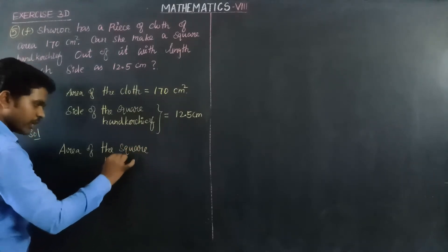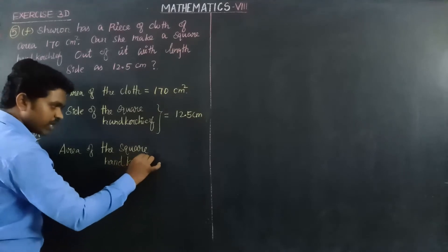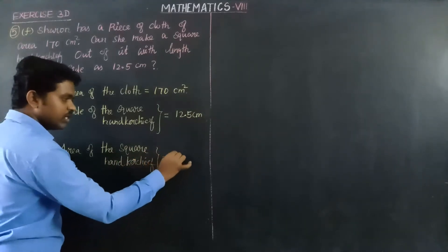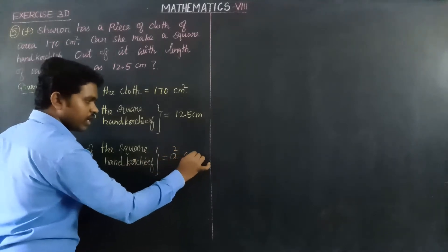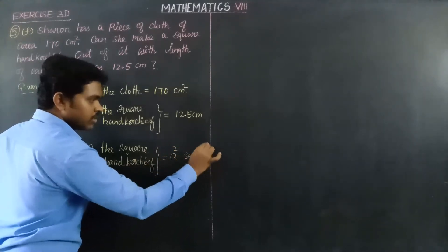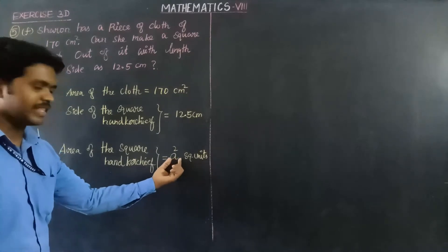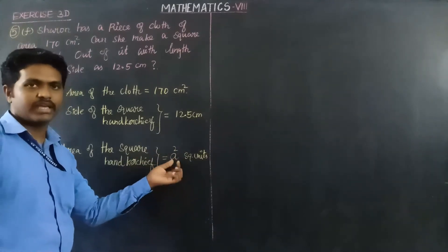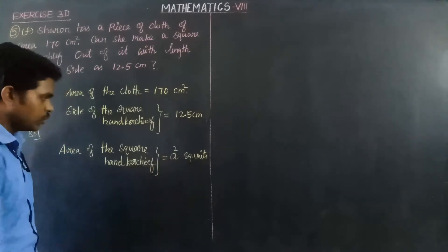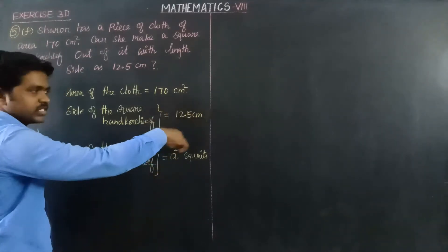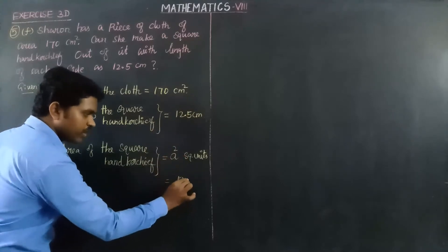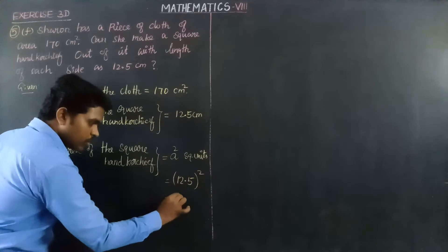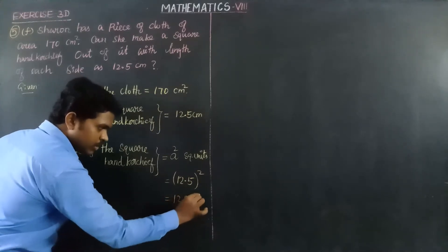The handkerchief is a square shape. Area of the handkerchief is equal to side × side, that is a × a, which is a square. The side of the handkerchief is 12.5 centimeters. So, 12.5 × 12.5.